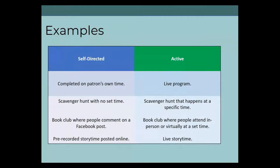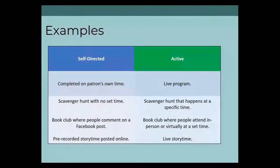Let's look at a few examples of self-directed versus active programs. For a scavenger hunt at the library: if you're just making the instructions and list of items available for patrons to carry out at their own speed, that would count as self-directed. If you have a scheduled event with a time limit for participants to report back and compare results, that would count as active. For a book club: a scheduled meeting in person or online counts as active; asynchronous comments on Facebook count as self-directed. For a storytime: a gathering of a live audience — in person or online — counts as active; making a recording available counts as self-directed.